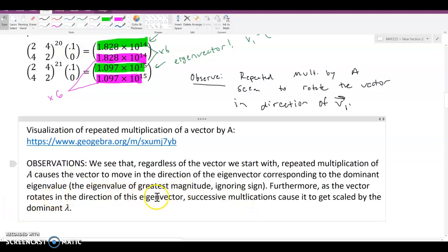Furthermore, as the vector rotates in the direction of this eigenvector, successive multiplications cause it to get scaled by the dominant lambda.